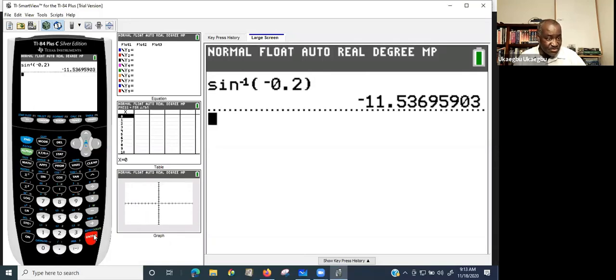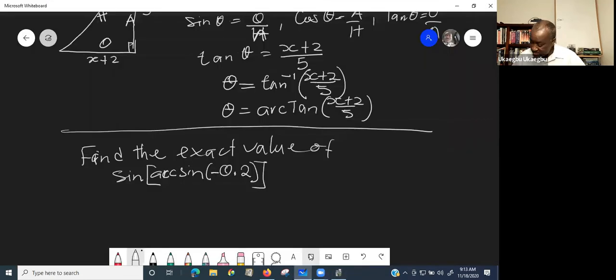Then, the next thing you do is, it says find the sign of it. So, let me go back to the screen. So, you can see that, arc sine...